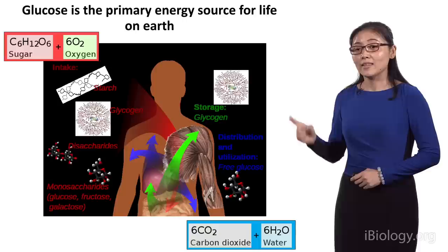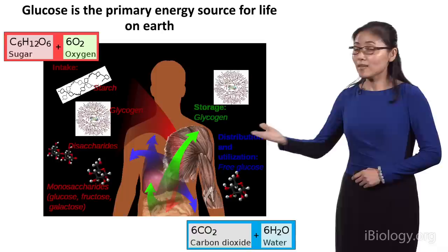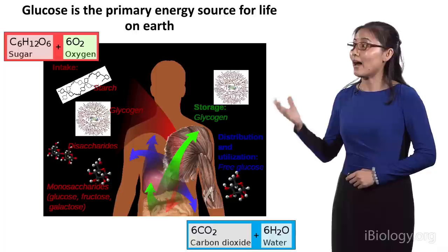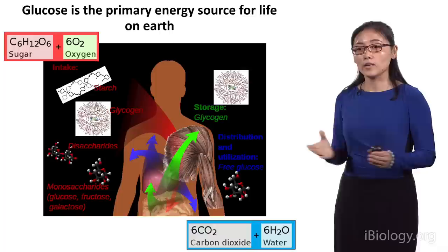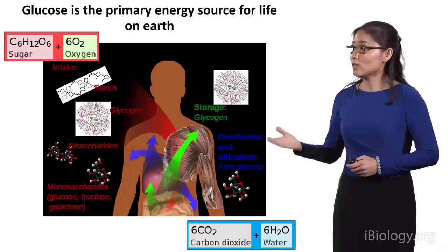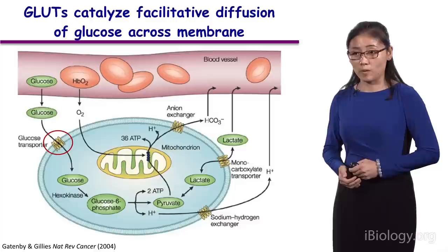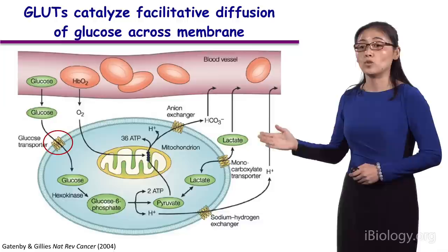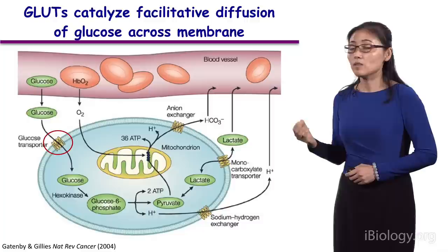However, before the metabolism of glucose, there is also one critical step: to take the glucose into the cell. I already told you that glucose is highly hydrophilic — that means they are water-soluble. However, the cell is surrounded by the hydrophobic lipid bilayer, so glucose cannot enter the cell through free diffusion. There must be different proteins to mediate this process. These proteins are called glucose transporters.